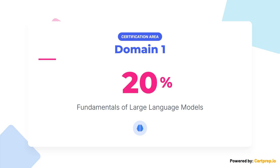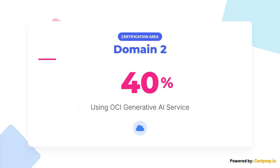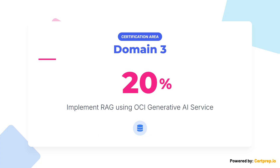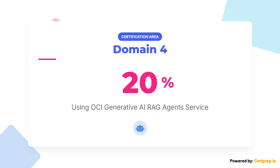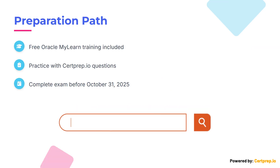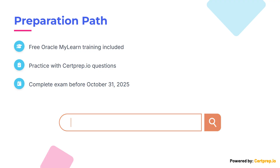Plan your preparation around these domains: Fundamentals of Large Language Models, 20%; Using OCI Generative AI Service, 40%; Implement RAG using OCI Generative AI Service, 20%; Using OCI Generative AI RAG Service, 20%. Reinforce your skills with practice questions and explanations on certprep.io — the link is in the description.